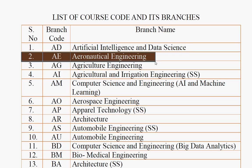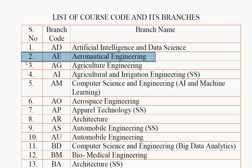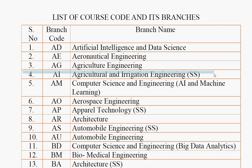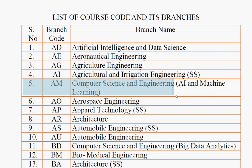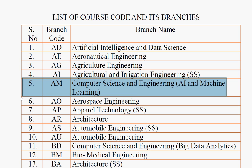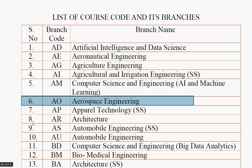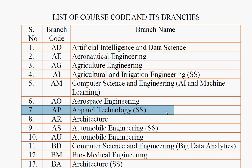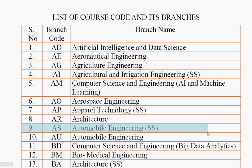Aeronautical Engineering — branch code AE. Agricultural Engineering — AG. Agriculture and Irrigation Engineering — AI. Artificial Intelligence and Machine Learning, which is a Computer Science and Engineering specialization — branch code AM. Aerospace Engineering — AO. Apparel Technology — AP. Apparel Technology is related to Textile Technology. Architecture — AR. Automobile Engineering self-supporting — AS.